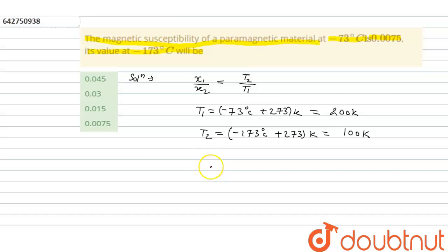So x1 is equal to 0.0075 upon x2, which will be equals to 100 upon 200. So it will give answer as 0.015.